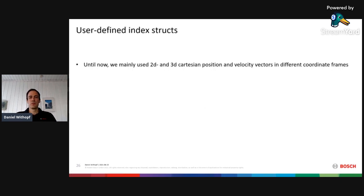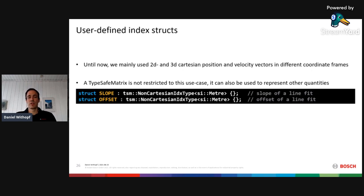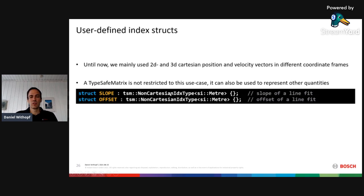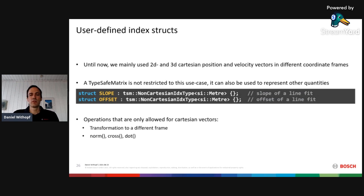TypeSafeMatrix is not restricted to Cartesian 2D or 3D use cases. For example, if you have a line fit with slope and offset, you can define two index structs derived from NonCartesianIndexType — specifying only the physical units, since non-Cartesian indices are not annotated with a coordinate frame. The key difference from Cartesian vectors is that transformations, norm, cross product, and dot product are only possible for Cartesian vectors, since only those form a proper vector space.